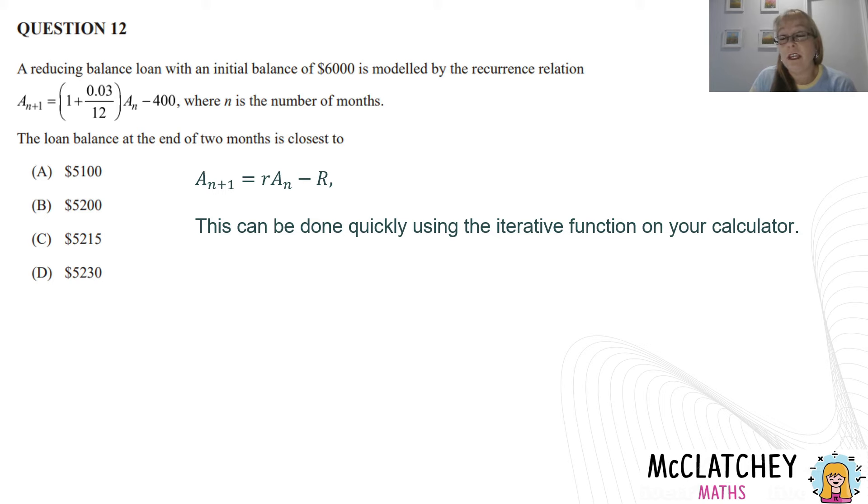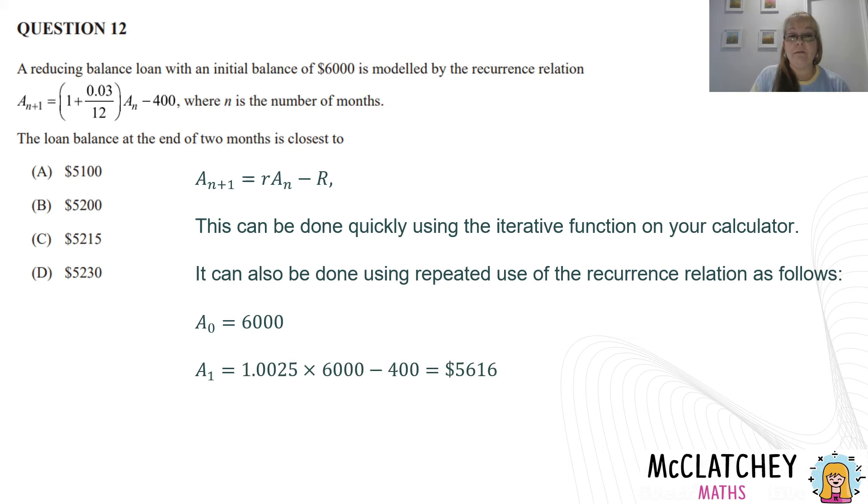So once again, could do it on the iterative function on your calculator. Or you could just do it by working on paper with repeated use of that recurrence relation. So I start at time zero with $6,000. At the end of the first month, I'm going to take $400 out after I've calculated the interest. So I'm going to multiply R by 6,000, take the 400 away. I get 5,615.